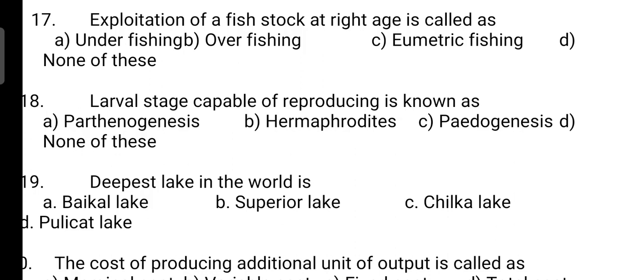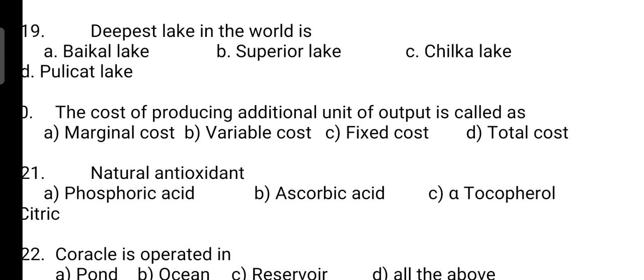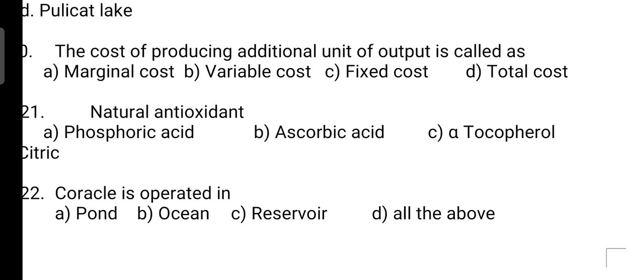The deepest lake in the world is? The correct answer is Option A — it is Lake Baikal. Next, cost of producing an additional unit of output is called? Correct answer is Option A — it is marginal cost. Next, natural antioxidant? Correct answer is Option C — it is alpha tocopherol.